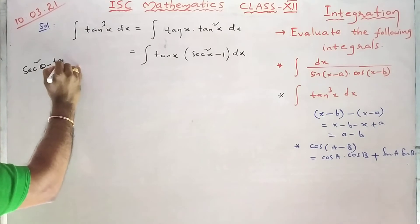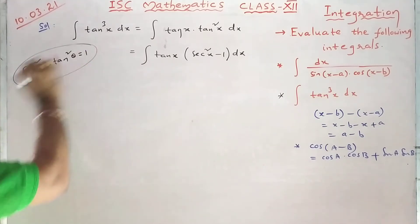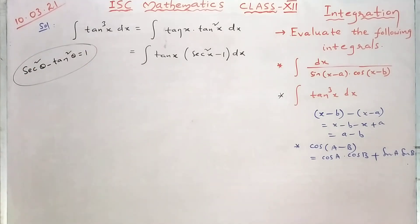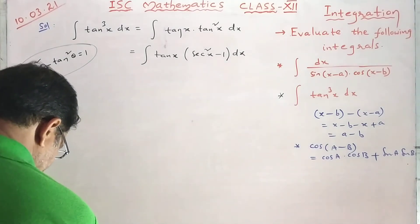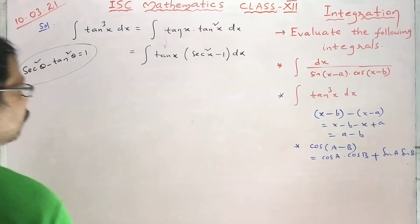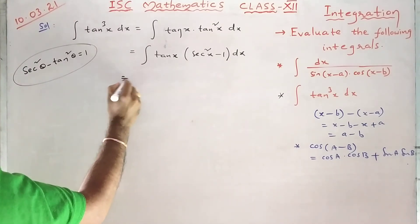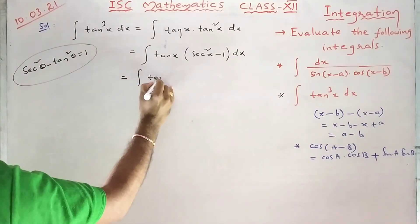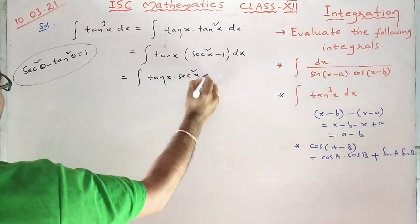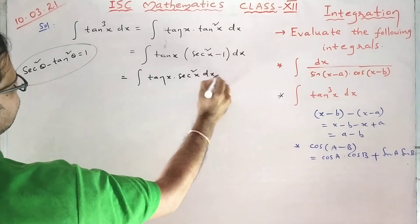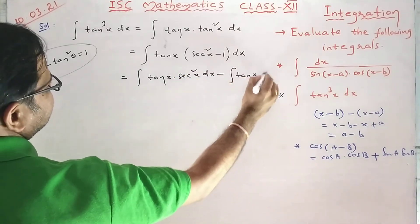This can be written as integral of tan x into secant square x minus 1 dx, using the identity secant square x minus tan square x equals 1. Just multiply inside: integral of tan x into secant square x dx minus integral of tan x dx.